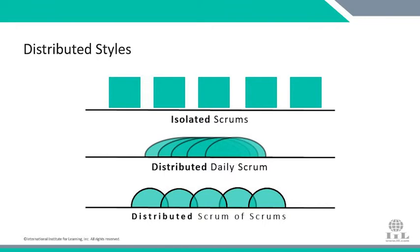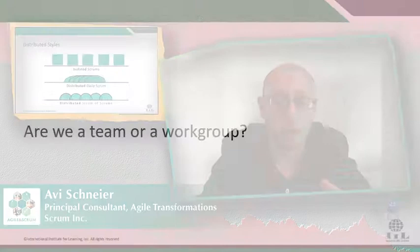Another distribution style is a distributed Scrum of Scrums, where not only do you have distributed teams, but they need to coordinate. A Scrum of Scrums is a team of teams that work together on a shared product or project. We have to find an overlap for them, because communication breakdown can lead to issues in the future.